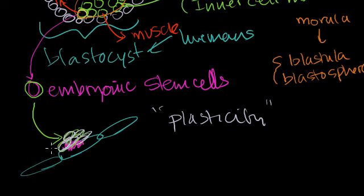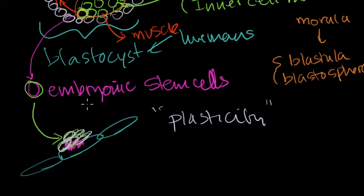You layer the stem cells where the damage is, and then they can turn into the cell they need to become. In this case they would turn into nerve cells and repair the damage, maybe curing the paralysis. So it's a huge, exciting area of research. In theory, you could even grow new organs — if someone needs a kidney transplant or a heart transplant, maybe in the future we could take a colony of these embryonic stem cells and turn it into a replacement heart or kidney.